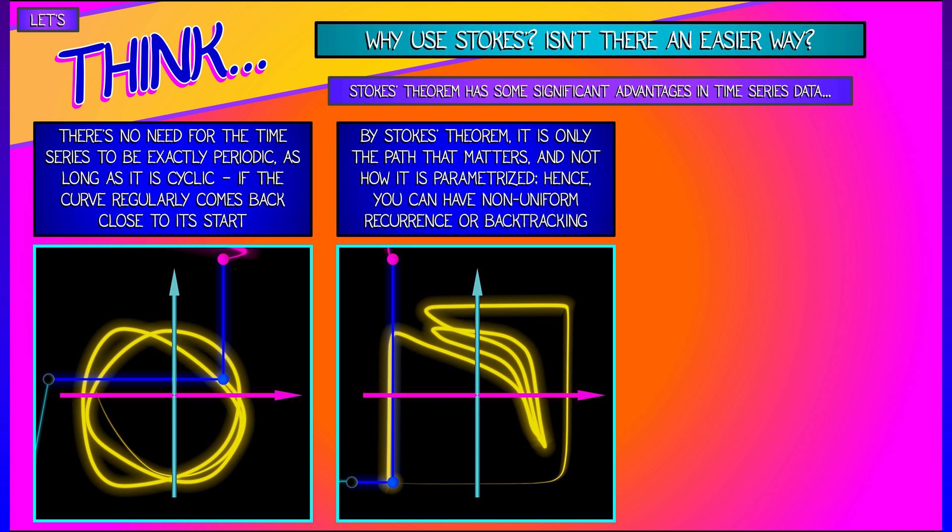Now, here's the real killer. Because of how Stokes' theorem works, it's only the path that matters, and not how the path is parametrized. This is the wonderful thing about differential forms. That means that we can have data that backtracks, or we can have data that is cyclic, but not in a uniformly recurring manner. What does that mean?